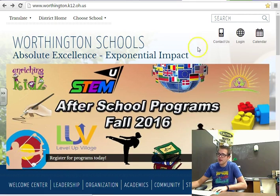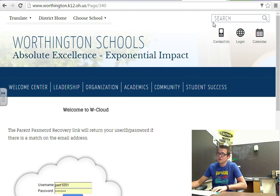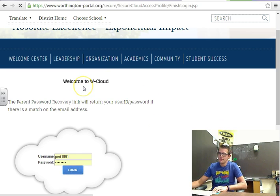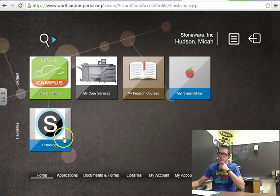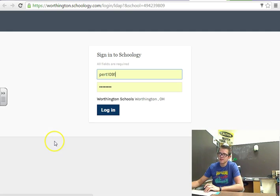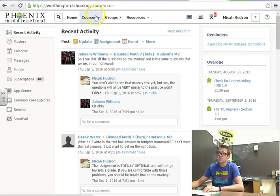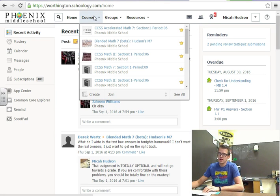So here we're on the Worthington webpage. There are tons of help tools that I have posted for students to be able to get their own help. So if they log into the cloud and then from the cloud they go to Schoology, which is our learning management system. Schoology is something Worthington just bought this past year, but Phoenix has had for a few years, so we're all pretty well versed in Schoology and how everything works.